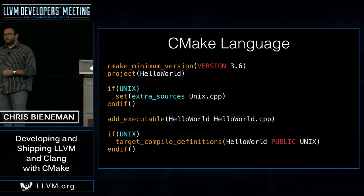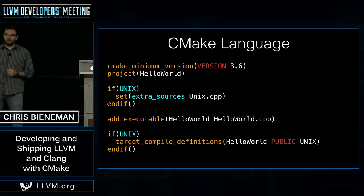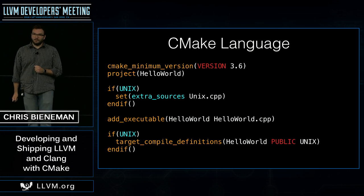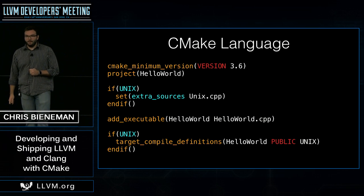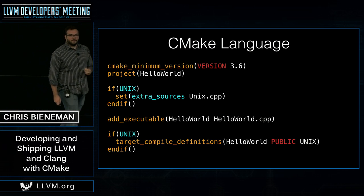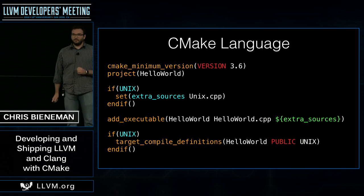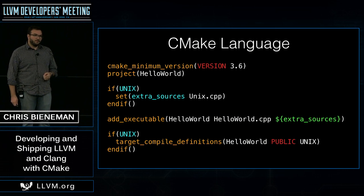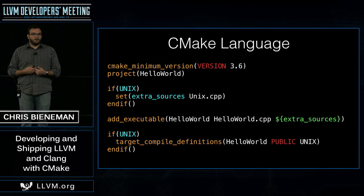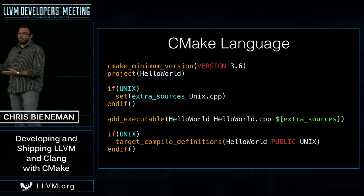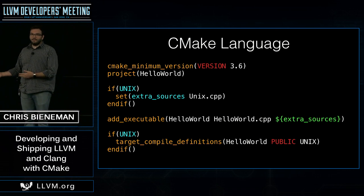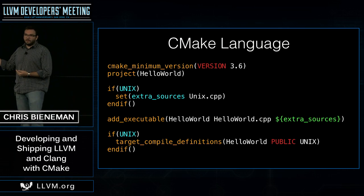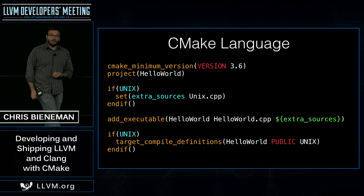We can make this example more complicated by saying maybe if you're on Unix you wanted to add an extra source file. We do this by inserting another conditional if Unix and setting a variable extra sources to unix.cpp. We then pass this into the add_executable call by expanding the variable. The CMake programming language behaves much like shell programming languages — if the variable is not set, it evaluates to an empty string, and it is as if it wasn't there. This allows us to take advantage of CMake's behavior and not duplicate complicated bits of logic.